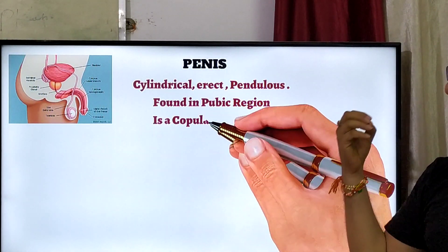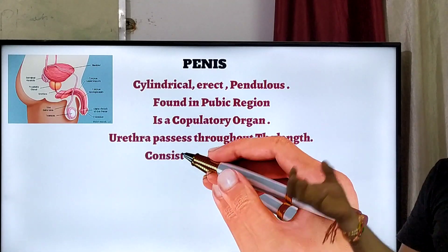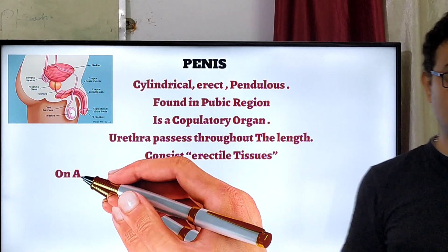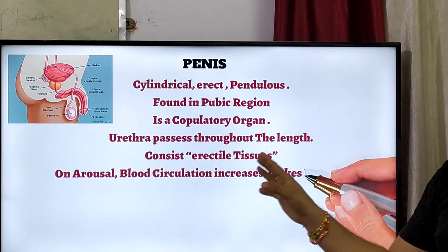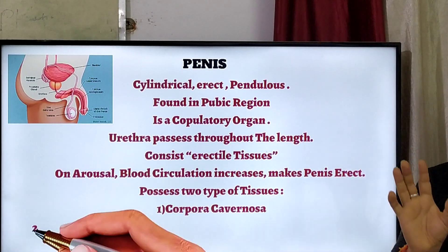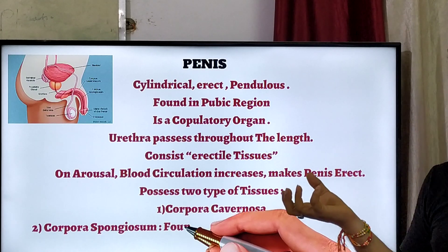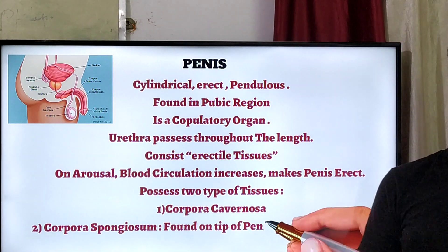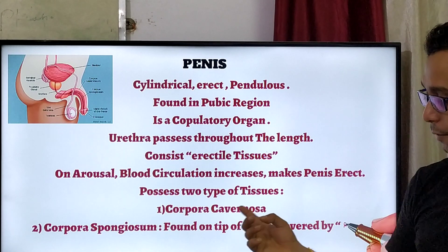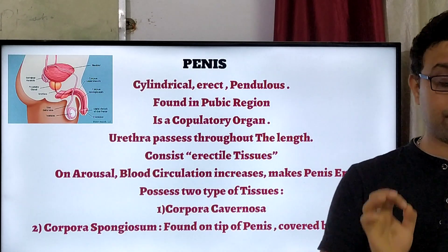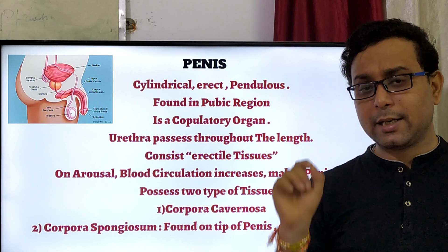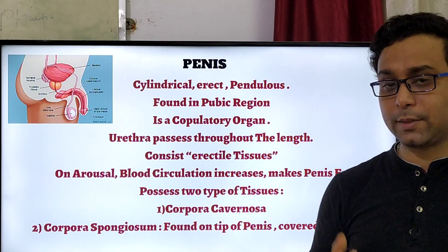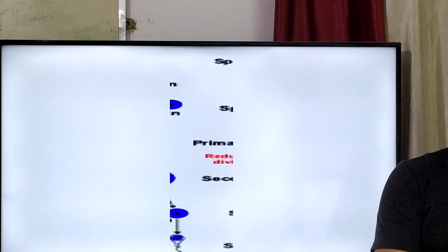The last part we discuss is the penis. The penis is the most important, muscular, cylindrical structure found in the pelvic or pubic region. It is a copulatory organ, helping in sexual intercourse. The urethra passes through the length of the penis, which consists of erectile tissue. During sexual intercourse, blood circulation increases and makes the penis erect. It contains two types of tissue — the corpora cavernosa and the corpora spongiosum. The tip of the penis is covered by a skin called the foreskin, which is a very sensitive structure.